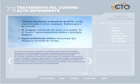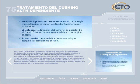Para concluir con este tema, comentaremos el tratamiento del Cushing ACTH-dependiente. En el caso de los tumores hipofisarios, la cirugía transesfenoidal es de elección, quedando la radioterapia en un segundo escalón terapéutico en caso de persistir restos tumorales. El tratamiento de elección del Cushing ectópico es la extirpación del tumor que lo origina. Sin embargo, si no se consigue visualizar el tumor y el paciente presenta sintomatología grave por exceso de cortisol, está indicada la suprarrenalectomía farmacológica, empleándose fármacos como el ketoconazol y la aminoglutetimida.